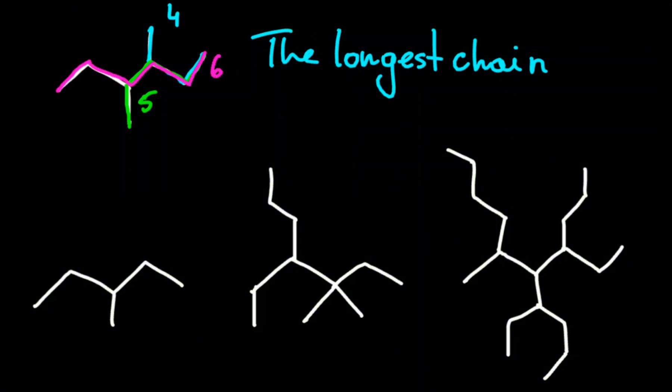The longest chain is the longest sequence you can find in the compound. So in this example it's six carbons. Let's look at a few examples and find the longest chains in the compounds. You should stop the video and try to find it on your own.